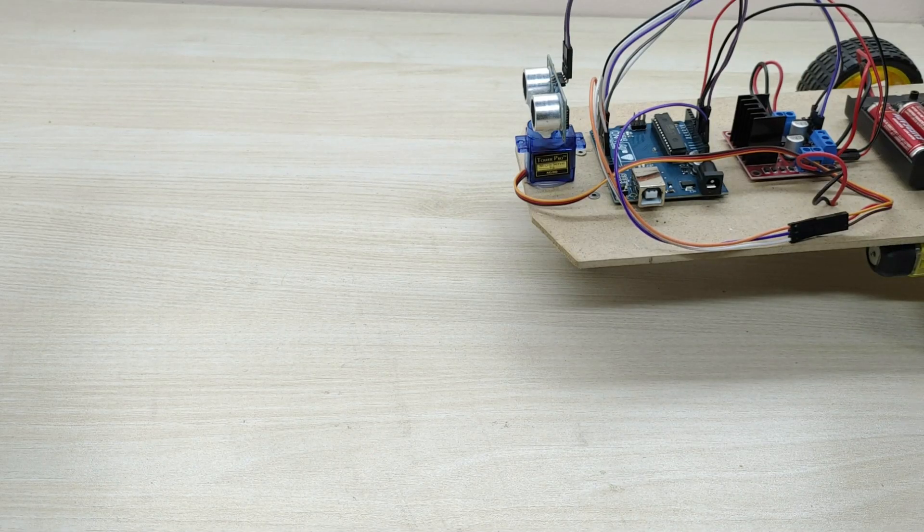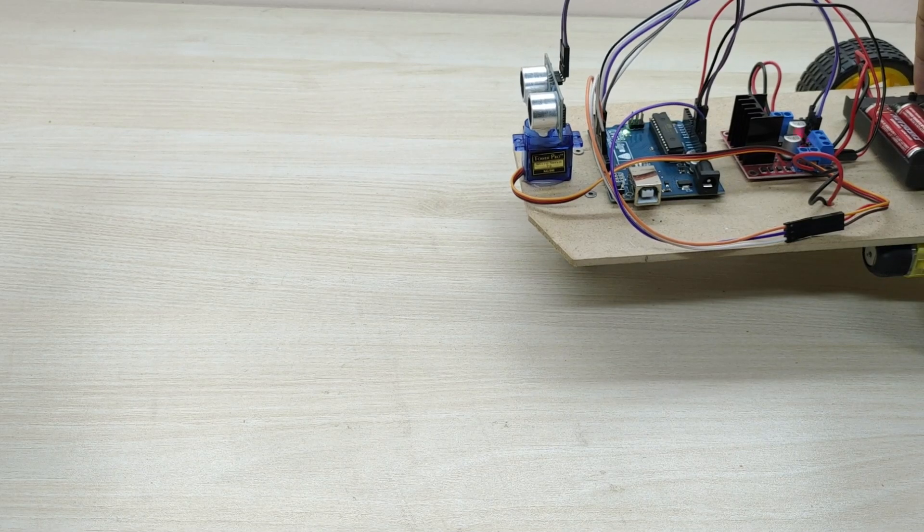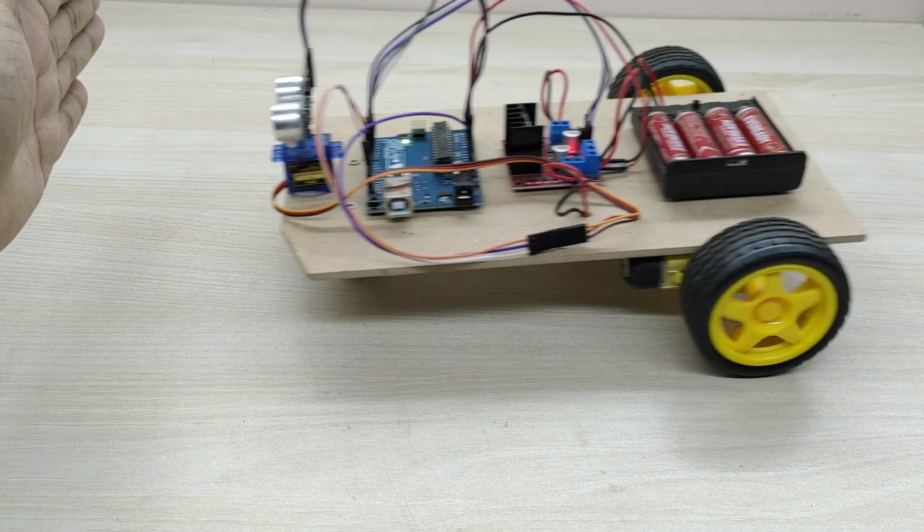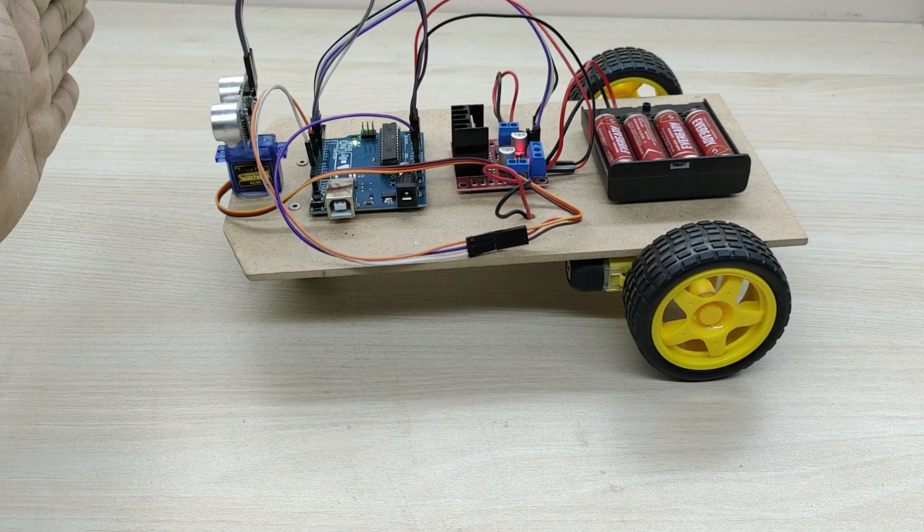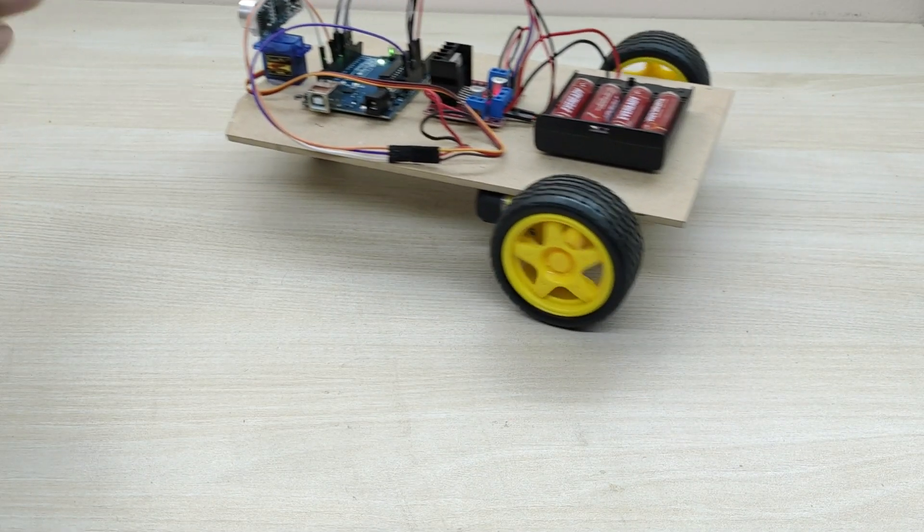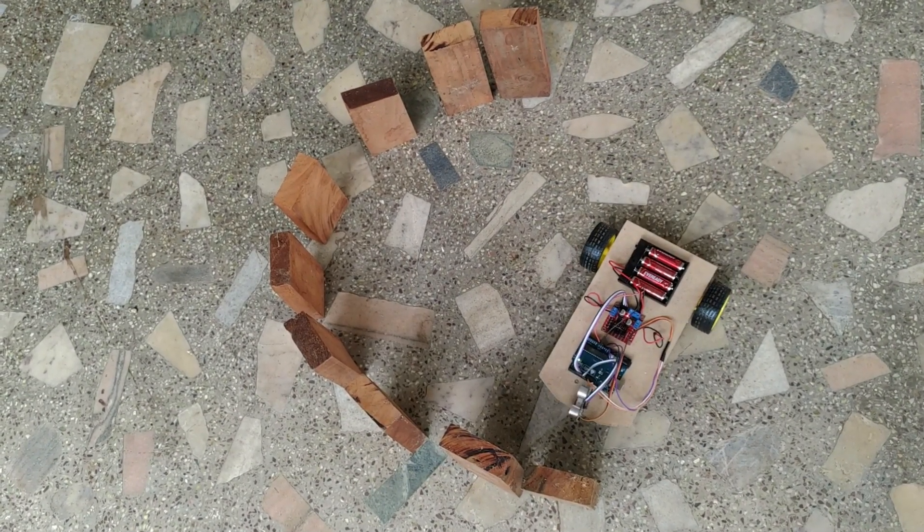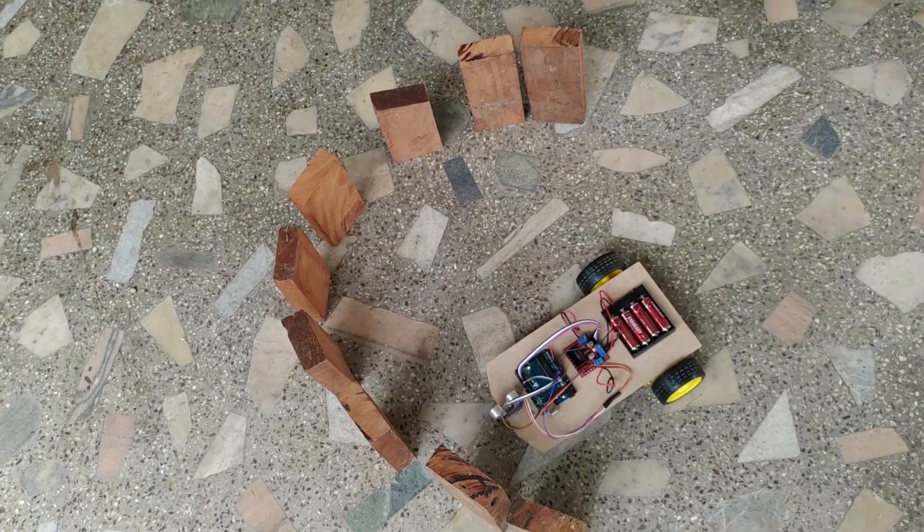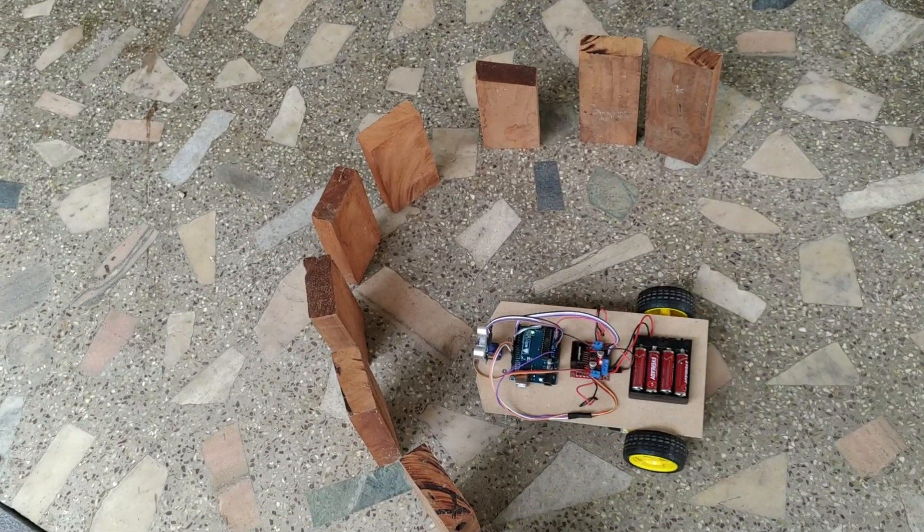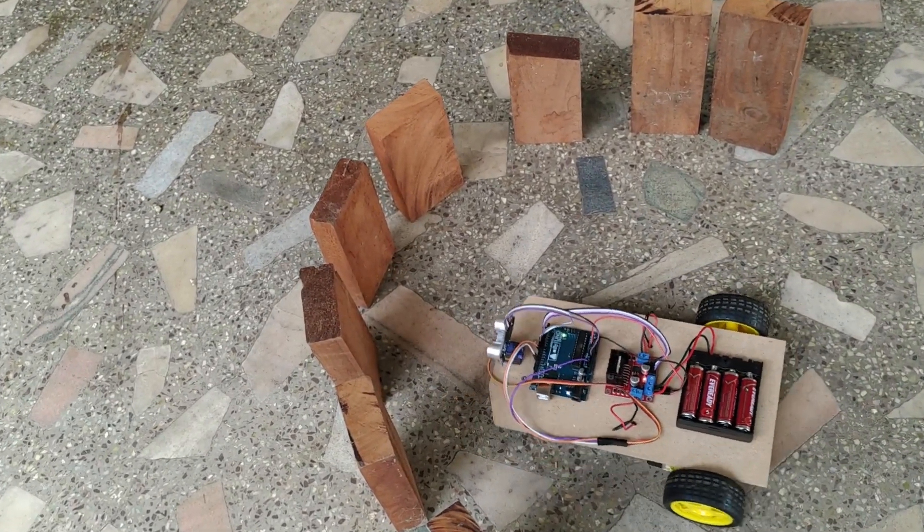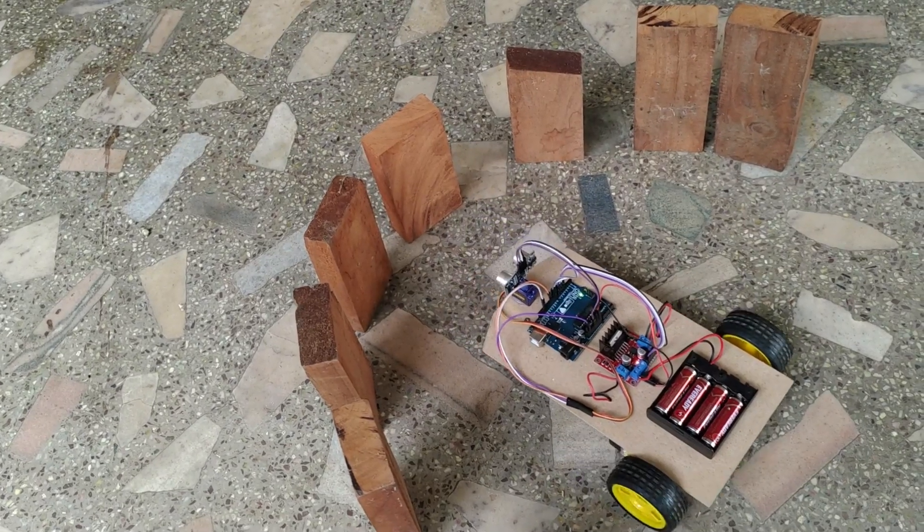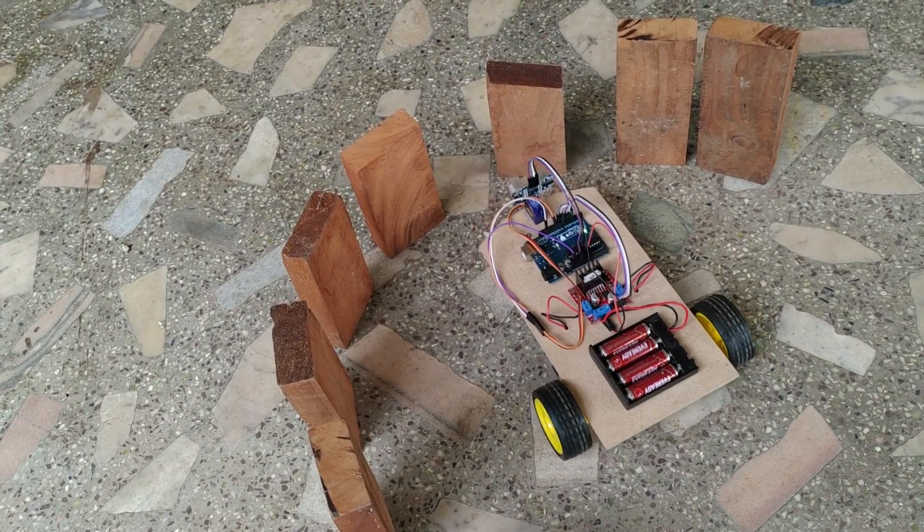Let us now test the working of the obstacle avoiding robot. The ultrasonic sensor detects the hand and thus changes the direction of the robot, thus avoiding the obstacle. I have made some obstacles using wooden blocks. The robot nicely detects the obstacles and changes its direction, finally escaping from all the obstacles.